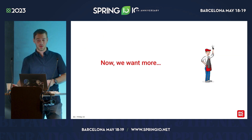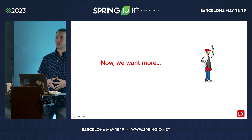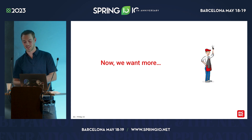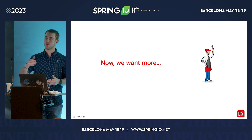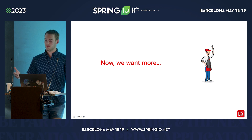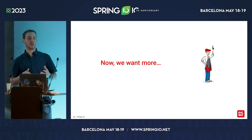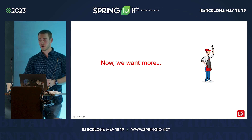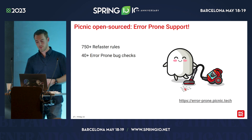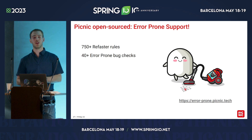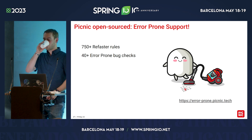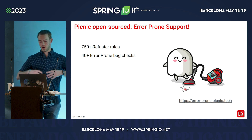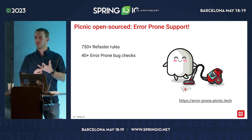At Picnic we are really fans of error-prone, and at some point we thought: we want to do even more and go to an ever more consistent and bug-free codebase. So we created a repository and added extra error-prone rules and Refaster rules to it. We had such a large collection of rules that we decided to share them with the community. About half a year ago, we open-sourced this repository — the name is error-prone support. It contains over 750 Refaster rules and over 40 error-prone bug checks. On the right you see our mascot, Cody the Codebuster.